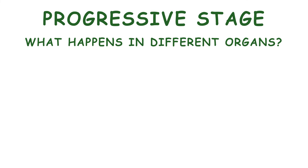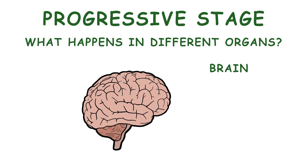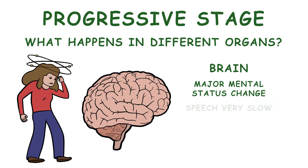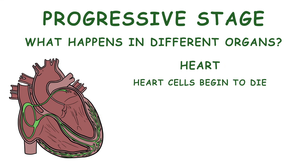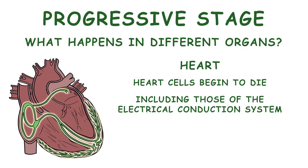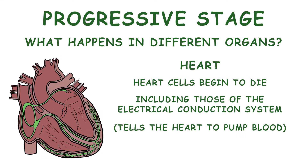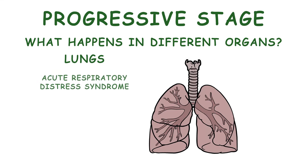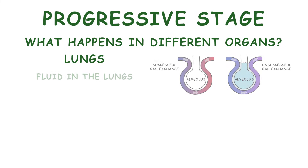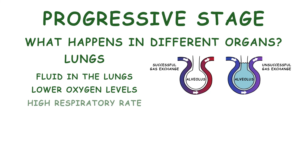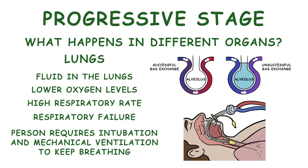When the brain does not receive adequate perfusion, there is a major mental status change — the person's speech is very slow, they will be agitated, and will not respond to stimulation. Heart cells begin to die, including those of the electrical conduction system, resulting in cardiac dysrhythmias. In the lungs, acute respiratory distress syndrome develops. Increased capillary permeability in alveolar sacs causes their collapse and the lungs lose elasticity, resulting in fluid in the lungs, lower oxygen levels, high respiratory rate, and respiratory failure. The person requires intubation and mechanical ventilation in order to keep breathing.